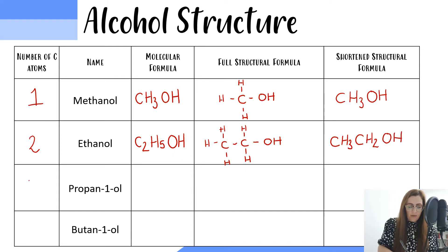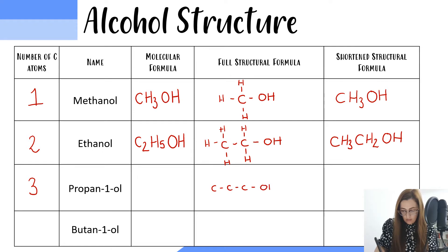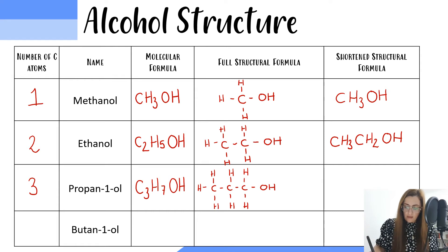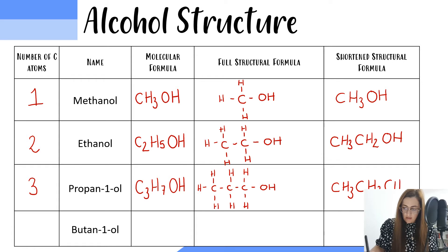The third member of the family is propan-1-ol. Propan-1-ol has three carbons in its chain with an OH or hydroxyl group at the end. We want to make sure every carbon has four bonds by filling in the hydrogens. The molecular formula for propanol has three carbons, seven hydrogens, and our OH at the end. The shortened structural formula is: CH3, then CH2, then CH2OH.